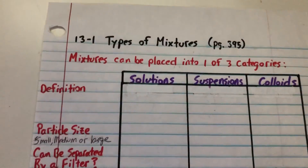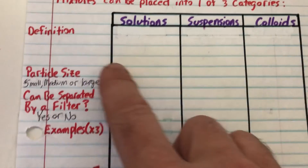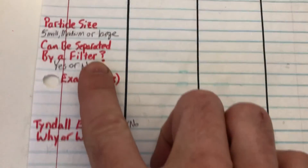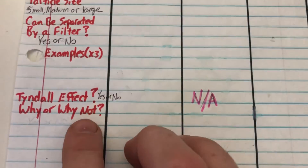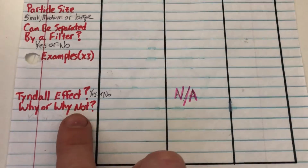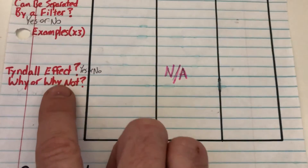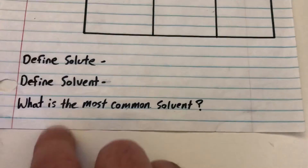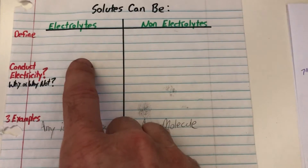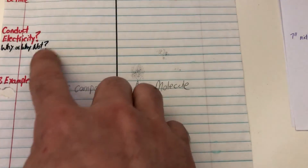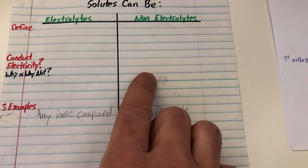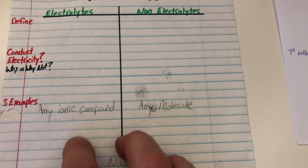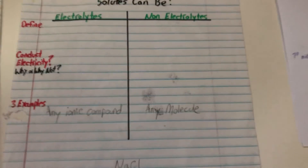We've got definitions of solutions, suspensions, and colloids; we've covered particle sizes; we've done the filtration demonstrations; examples should be very easy for you to look up. We've seen the Tyndall effect, defined solutes and solvents, defined electrolytes and non-electrolytes, and seen that electrolytes conduct electricity while non-electrolytes don't. Again, examples should be very easy for you to find.